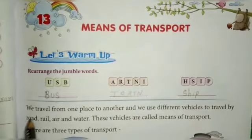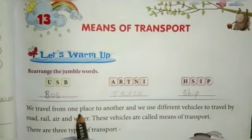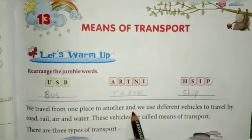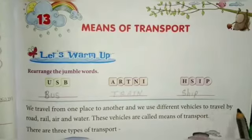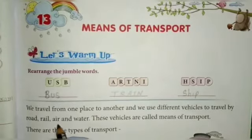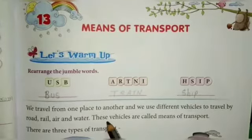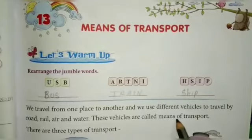Let's read. We travel from one place to another and we use different vehicles to travel by road, rail, air and water. These vehicles are called means of transport.